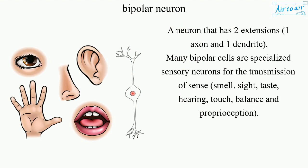Many bipolar cells are specialized sensory neurons for the transmission of sense: smell, sight, taste, hearing, touch, balance, and proprioception.